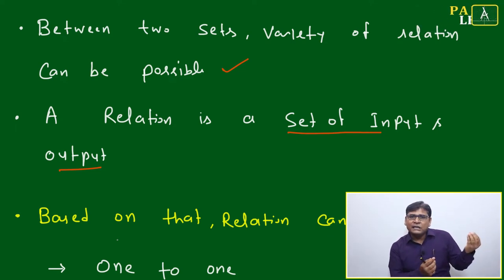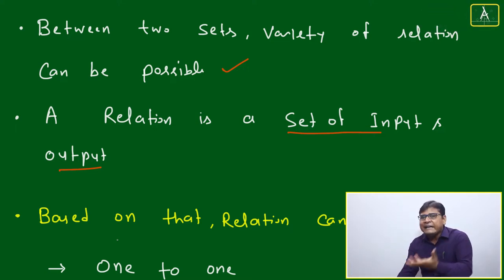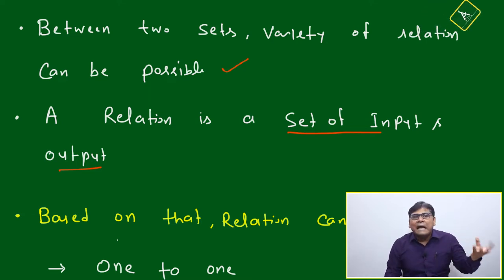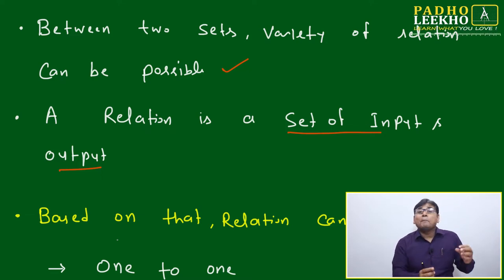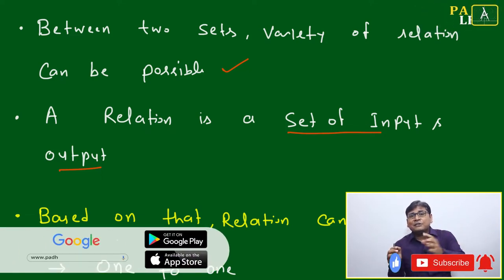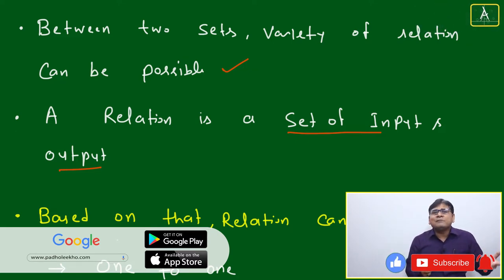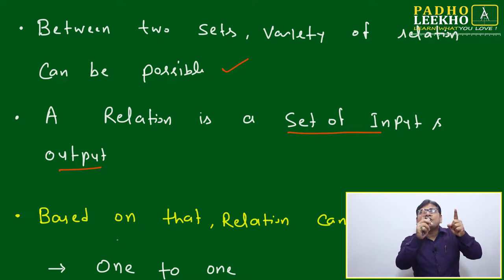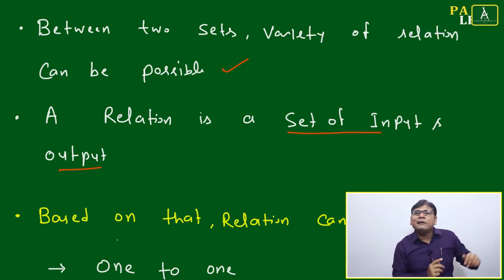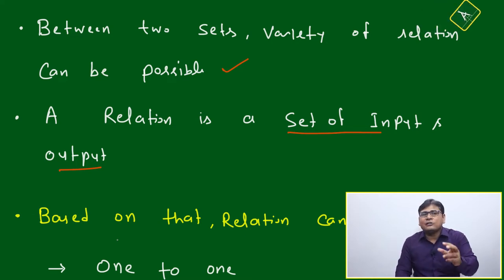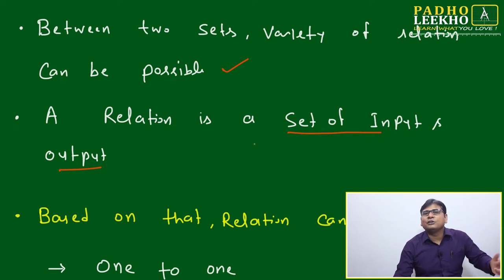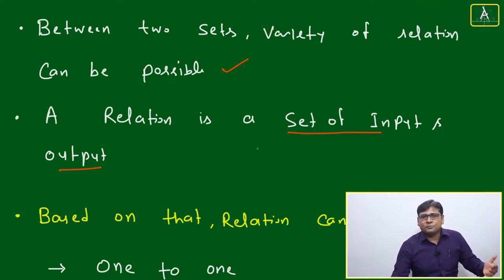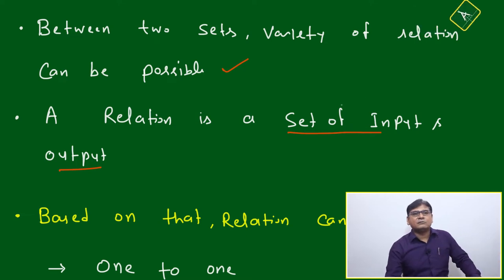A collection of numbers or elements is called a set. However, there is a difference between a random collection and a set. A random collection without any mathematical logic is just a collection, but if you apply a mathematical rule — like selecting natural numbers less than 10 — it becomes a set. Details of set theory, subsets, and proper subsets will be covered in a separate master's talk.